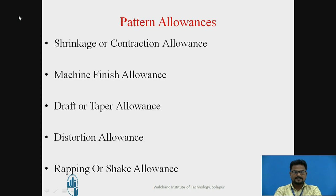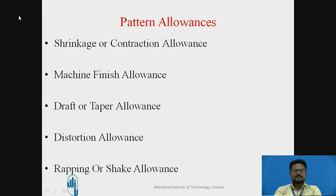The next allowance is Machining Finish Allowance, also called machining allowance. It is the excess dimension added on a pattern to obtain additional material on the casting. These allowances are necessary to provide stock for machining, and are provided over and above the shrinkage allowance. The amount of machining allowance depends on the type of metal to be cast, the design and method of casting, and the cleaning requirement. Generally, 3 mm machining allowance is provided for castings.